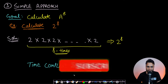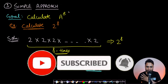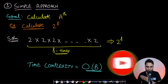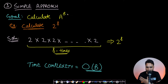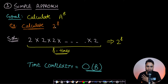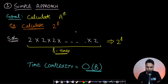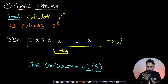Now let's look at the problem statement. We are given a to the power of b and we just want to find the final answer. For example, 2 to the power 8 — the simplest approach would be to take the base the exponent number of times: multiply 2 eight times. That works, but the number of operations is O(b), so the time complexity for this approach is O(b).